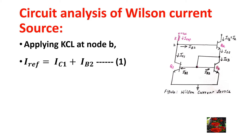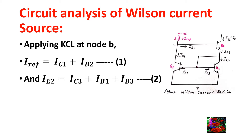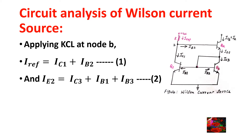And I_E2 = I_C3 + I_B1 + I_B3. That is, at transistor Q2, the emitter current I_E2 is the current coming out from transistor Q2. This I_E2 equals I_C3, that is the collector current flowing through transistor Q3, as well as the base currents flowing through transistors Q1 and Q3. That is, I_E2 = I_C3 + I_B1 + I_B3. Consider this as equation 2.